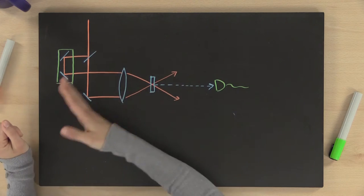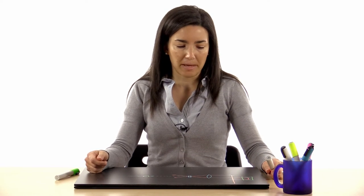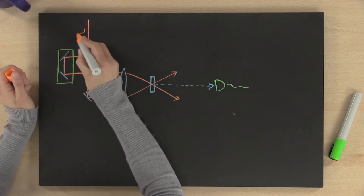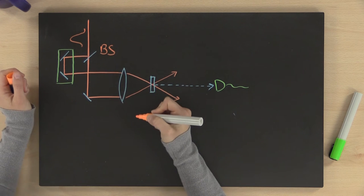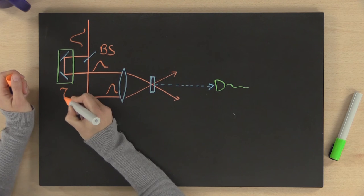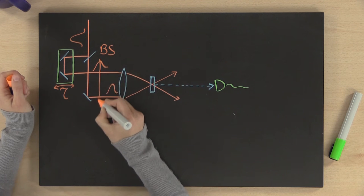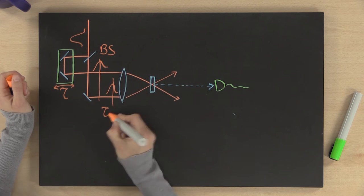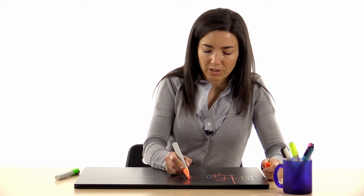The scheme for an intensity autocorrelation is represented in this figure. We first need to create a replica of the main pulse, which is created by sending the pulse through a beam splitter. The two replicas are then properly delayed by using a translation stage, and the delay created between the two pulses is tau. The two pulses are then focused inside a non-linear medium, for example a second harmonic generation crystal.